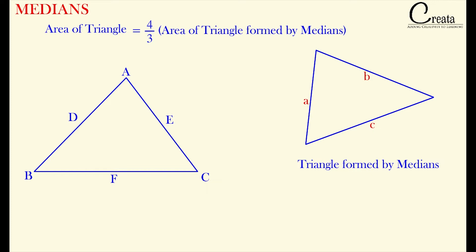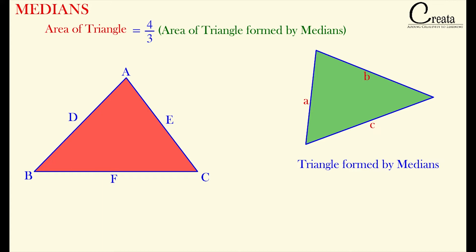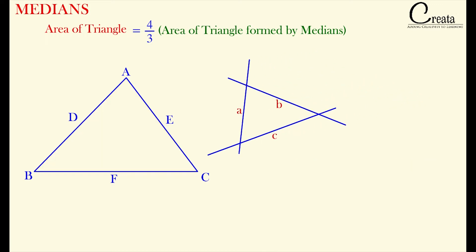As per this concept, area of triangle ABC is equal to 4 by 3 times the area of the triangle formed by these three medians. This is a very important concept — you should remember it. But now the question is why? Why is the area of this triangle equal to 4 by 3 times the area of the triangle formed by the medians? Let's see.